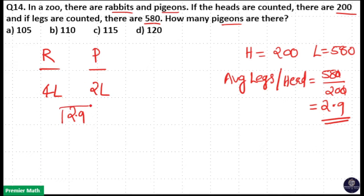So, this is the average value. Then, if you take the allegation method, 4 minus 2.9 is equal to 1.9. 2.9 minus 2 is equal to 0.9. If you multiply it by 10, it will become 9 is to 11. So, 9 to 11 is the ratio of rabbits and pigeons.